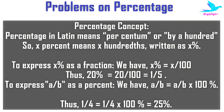That equals one by five. To express a fraction as a percent, we have A by B equals A by B into 100. Thus one by four equals one by four into 100 percent, which is equal to 25 percent.